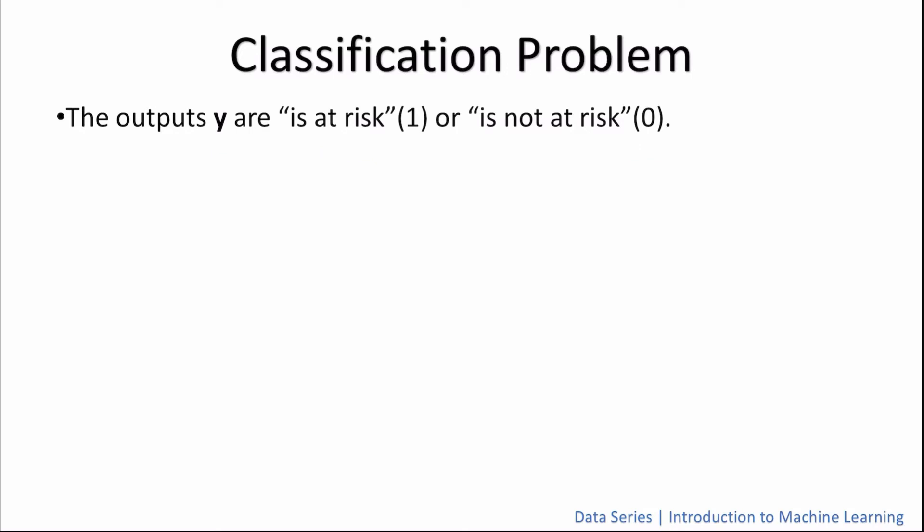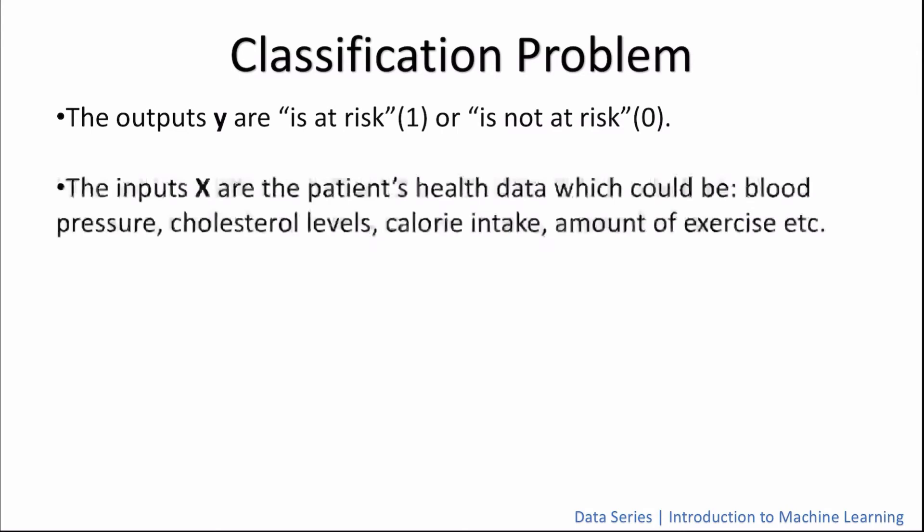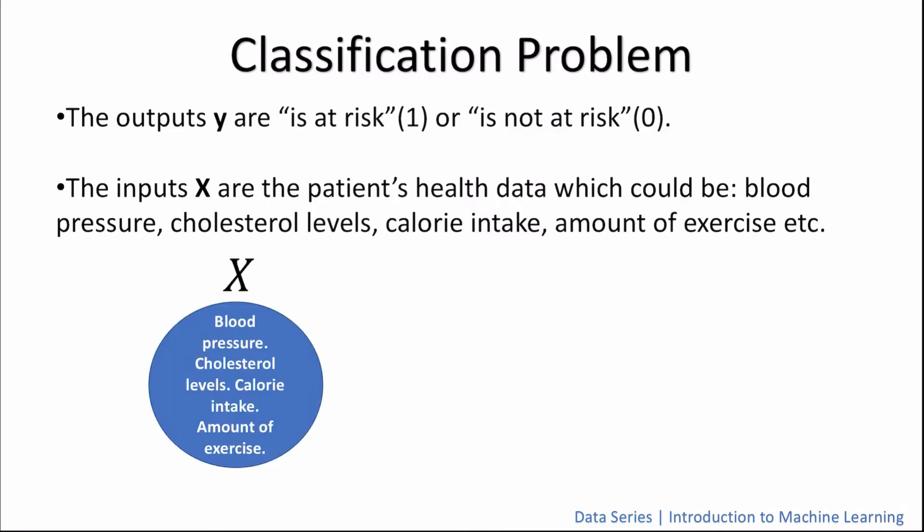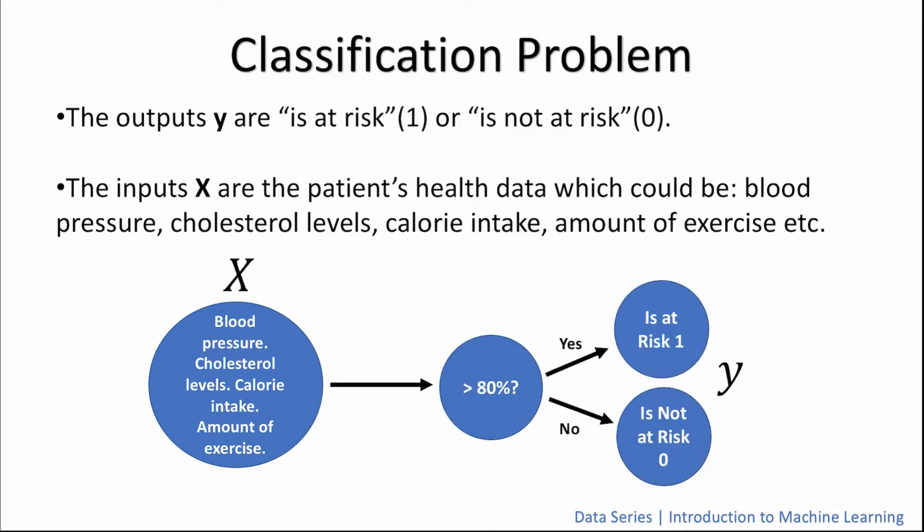Coming back to our example the inputs x are the patient's health data which could be blood pressure, cholesterol levels, calorie intake, amount of exercise, essentially all things which could possibly put this person at risk of a heart attack. Again, the job of our supervised machine learning algorithm is to use all of these features or inputs x to come up with a final output y. However, the second to last output in this case will most likely be a percentage chance of the patient having a heart attack. From this we can say that for instance if the chance is bigger than 80% the patient is at risk and we put into group one and if it is less than 80% then we can say that the person is not at risk and we put into group zero. These two groups will be considered our output y.